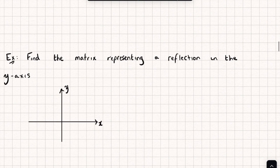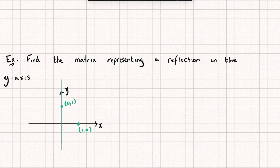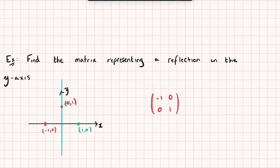Let's look at another example. Here we're asked to find the matrix representing a reflection this time in the y-axis. Again, let's see what happens to our i and j unit vectors under the transformation. Reflecting in the y-axis, the point (1, 0) is going to be reflected over to the point (-1, 0) — that's the first column of my transformation matrix. The point (0, 1) is going to remain fixed, so the second column is just (0, 1). This matrix represents a reflection in the y-axis.